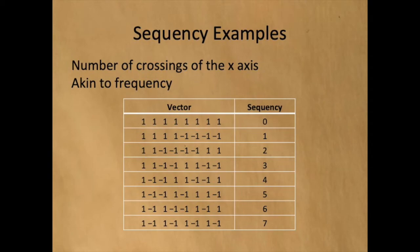The first sample vector is all 1s, so there are no transitions, and so it has a sequency of 0. The second vector has four 1s, followed by four minus 1s, so there is one transition, and it has a sequency of 1.